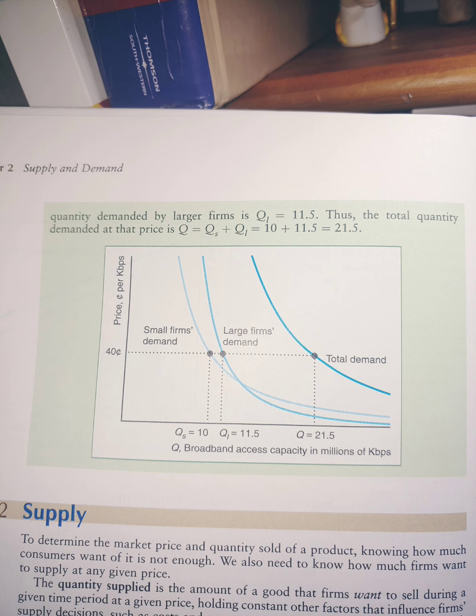We have a graph with price per kilobyte on the horizontal axis—it's the norm in economics. Then we have Q on the vertical axis. We have a graph depicting small firms' demand and larger firms' demand individually, then a graph shifted and combined to the right, which is the total demand.